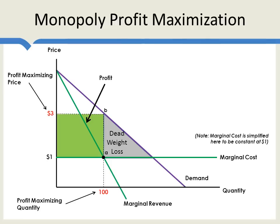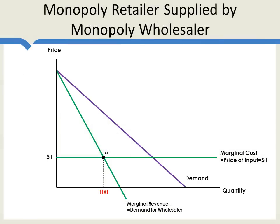One slight twist here: we can think about the marginal cost curve. Imagine that this monopolist is buying its inputs from a competitive industry, so the marginal cost to the monopolist is the price of the inputs. We're now going to assume this is a monopoly retailer which is going to be supplied by a monopoly wholesaler. From the point of view of the retailer, the marginal cost is the price set by the wholesaler. To make things simple, we'll assume that every unit produced by the retailer requires one input from the wholesaler — think about cars and engines: the retailer sells cars, and for every car it sells, it needs one engine from the wholesaler.